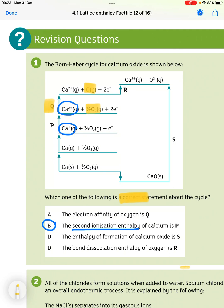That's not electron affinity. The second one, the second ionization enthalpy of calcium is P. So we've got calcium ion here going to a calcium 2 plus ion. So that is correct.